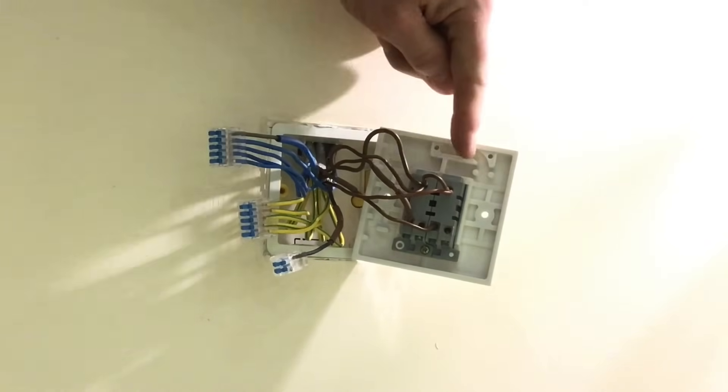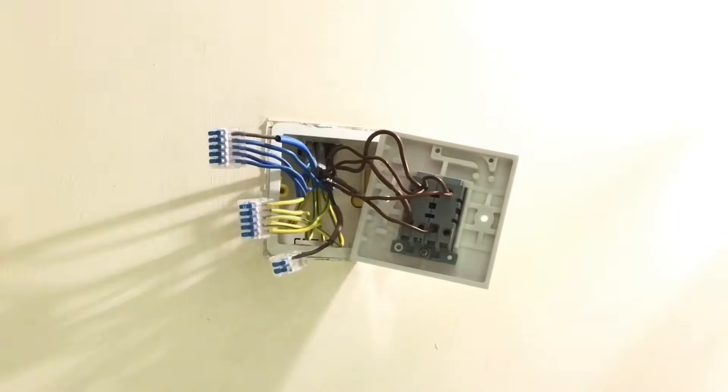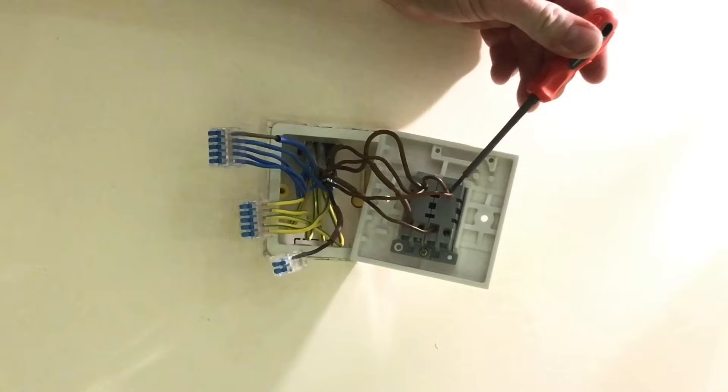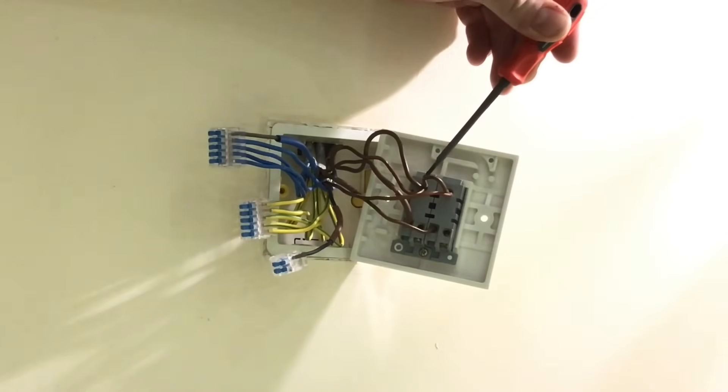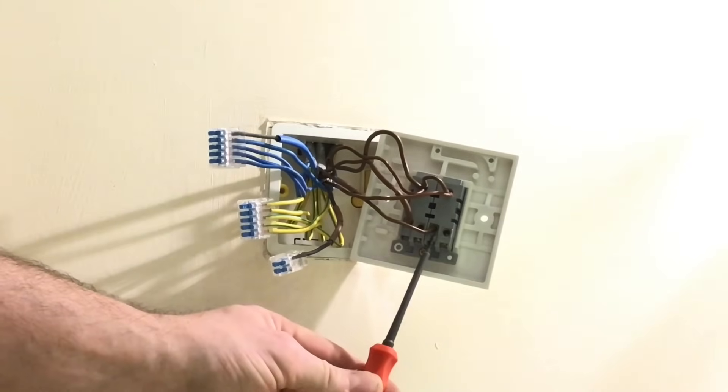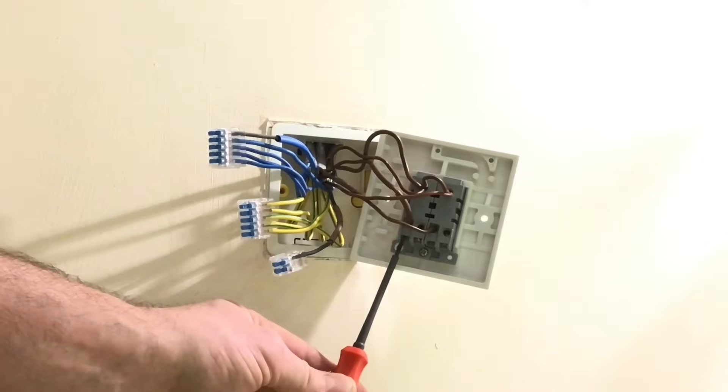So this one here potentially is the feed coming in, and then that's looped across to this side to bring the feed across. You've got switching line coming out here for the main lights in the kitchen, and switching line coming out here for the pelmet lighting.